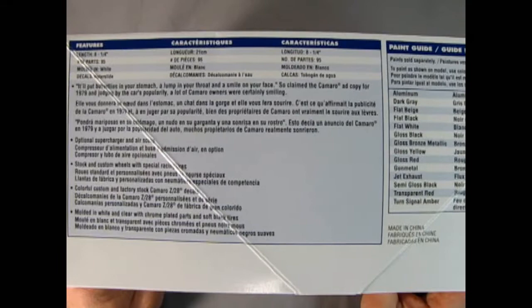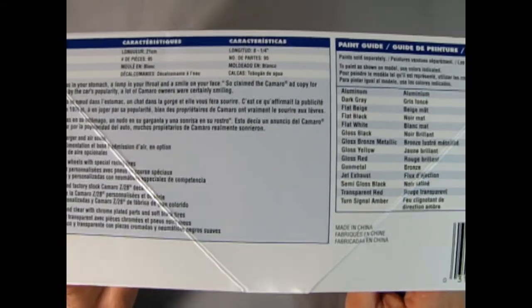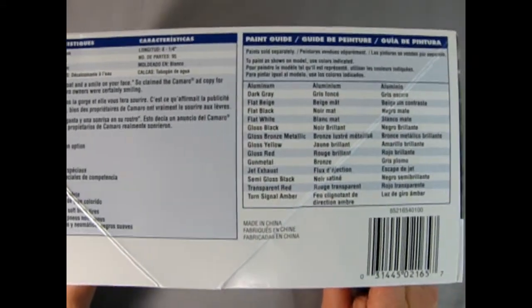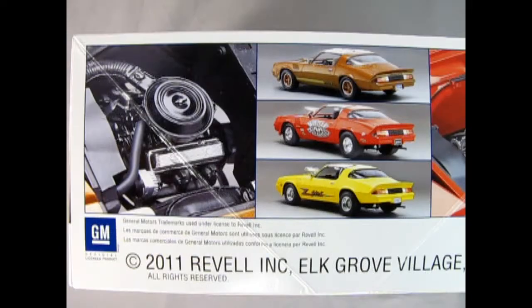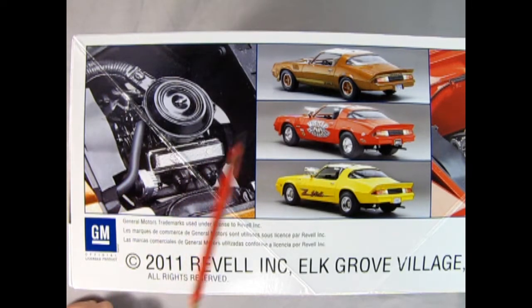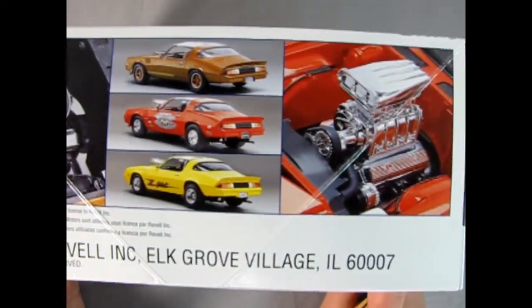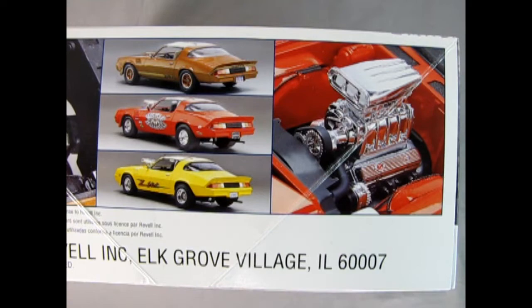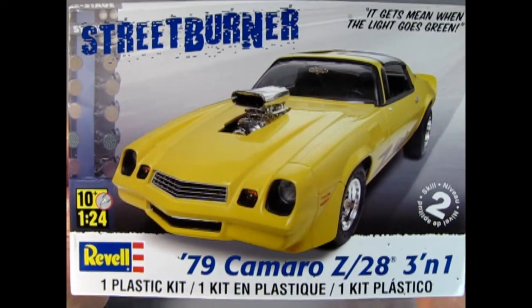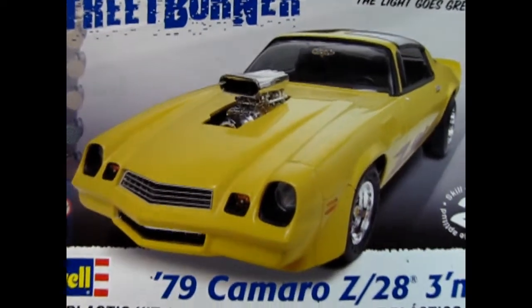On this side of the box we get some great details and history as well as the paint color chart. On this side we've got pictures of our factory stock engine, the three different building options, and this amazing blown street machine engine. Now let's open up the lid on our street burner kit and see what we have inside.